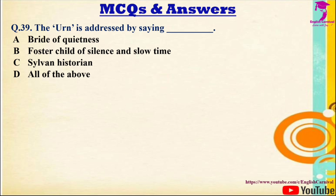Question 39: The urn is addressed by saying — Options: A) Bride of quietness, B) Foster child of silence and slow time, C) Sylvan historian, D) All of the above. The correct answer is D — all of the above.